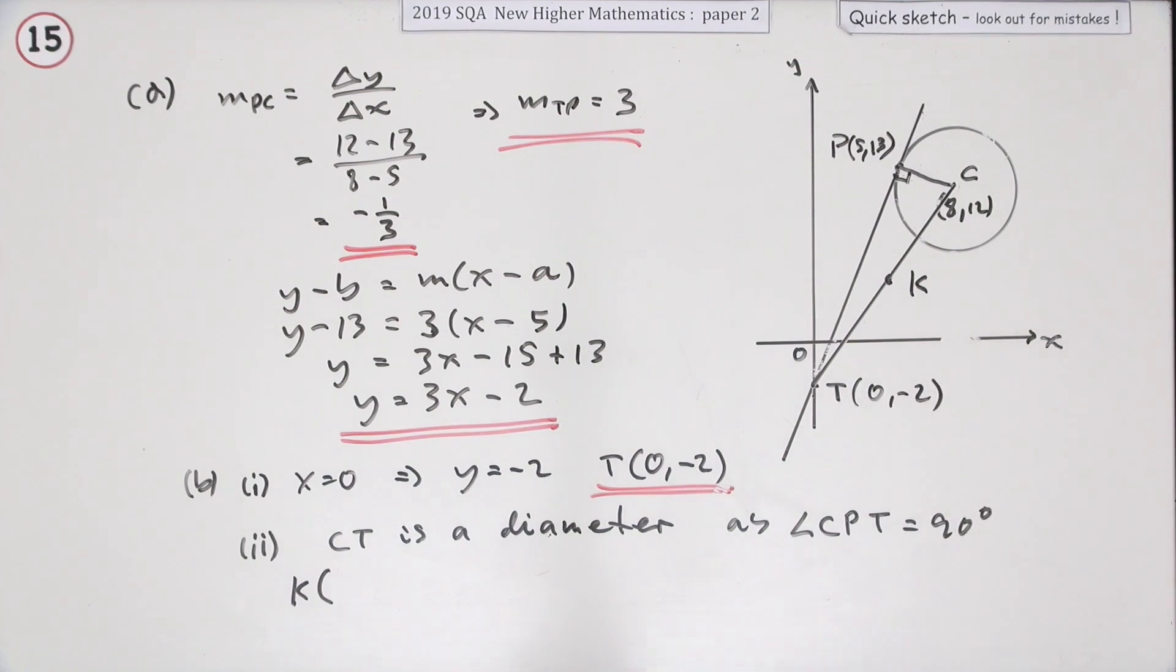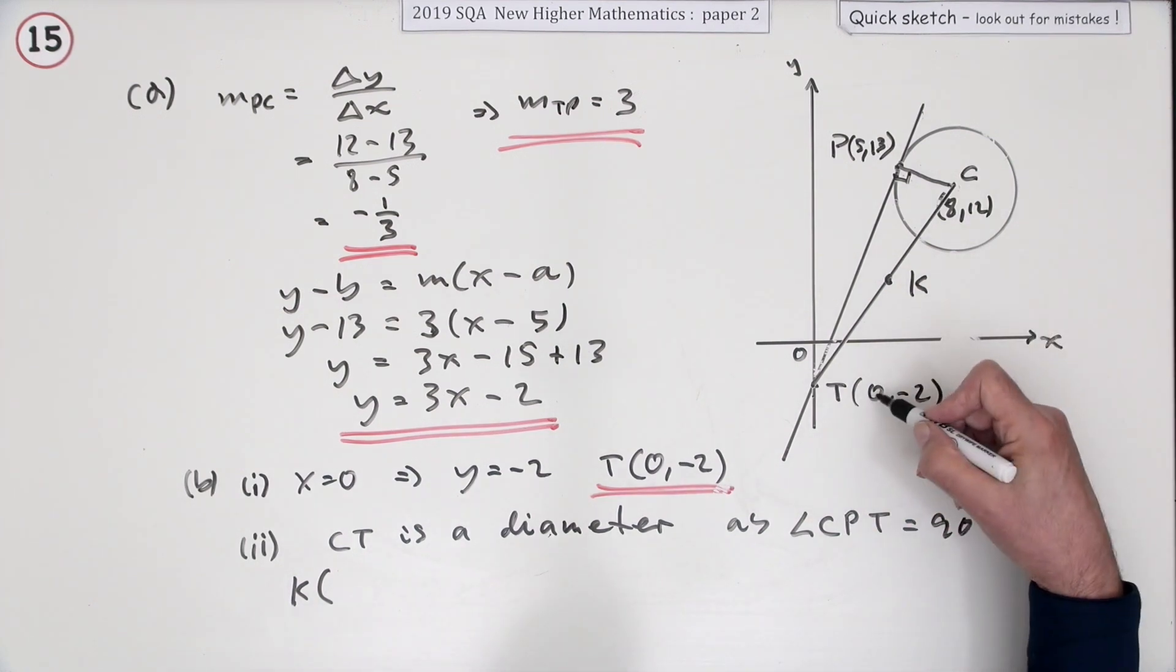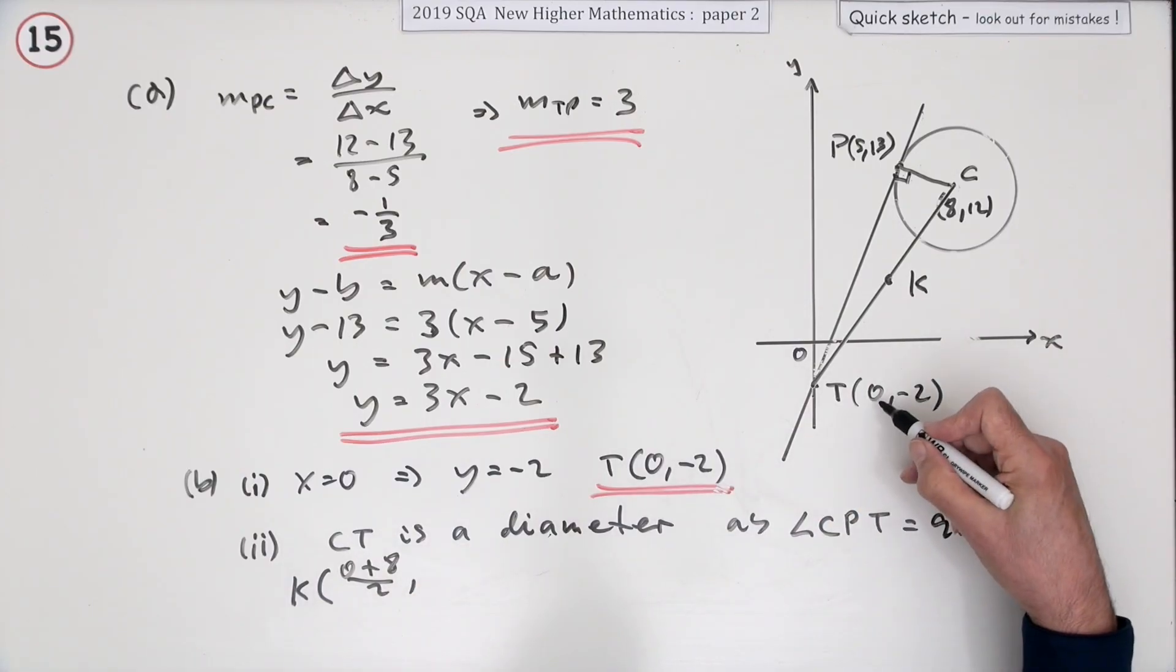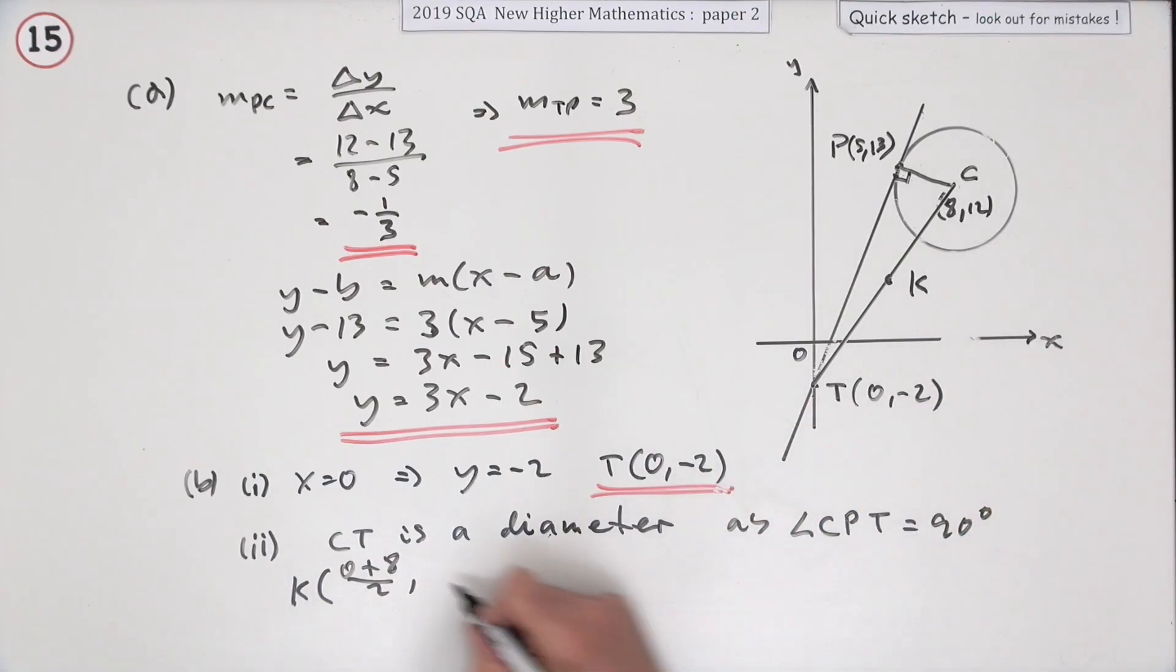That was 0, negative 2. So you could just state it, or you could go through the calculation. Average of the coordinates, 0 plus 8 upon 2 for the x's. Negative 2 plus 12 upon 2. So k is the point 4, 5. I'll just show that with centre. That's the centre. Centre's at 4, 5.